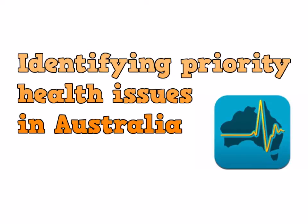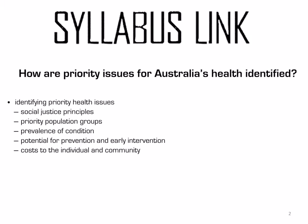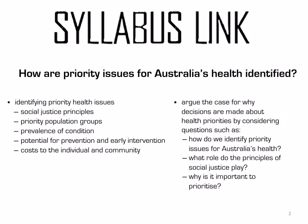This presentation will address identifying priority health issues in Australia. There are five key aspects or factors to consider when identifying priority health issues: social justice principles, priority population groups, prevalence of condition, potential for prevention and early intervention, and costs to the individual and the community. We're going to learn about how we identify priority health issues, the role of social justice, and why it is important to prioritise.